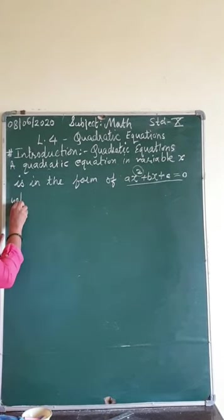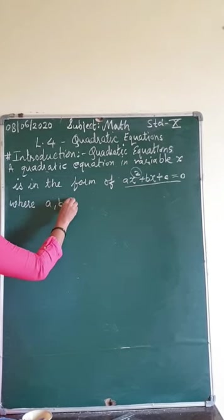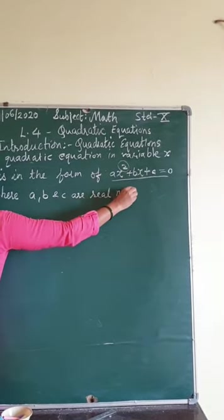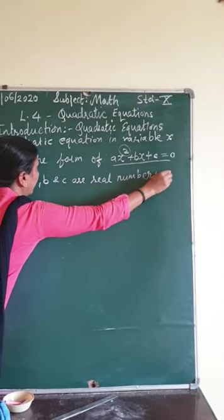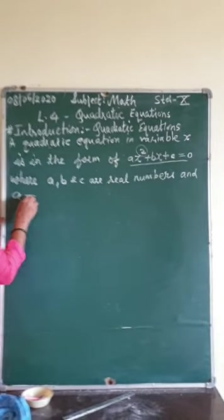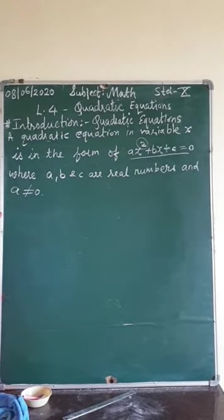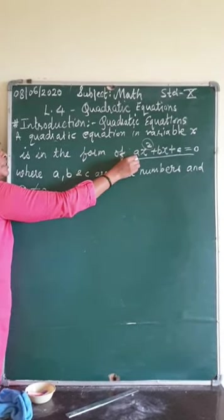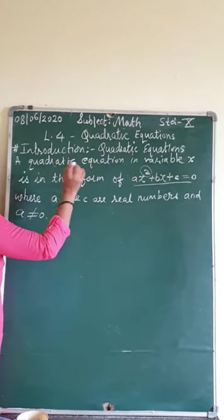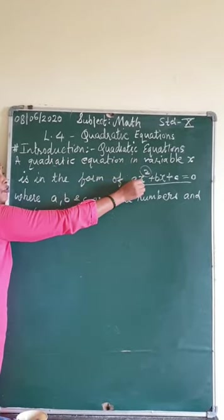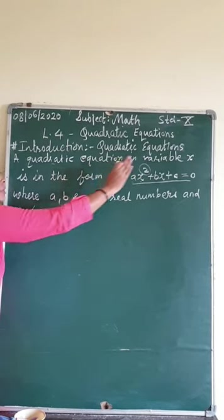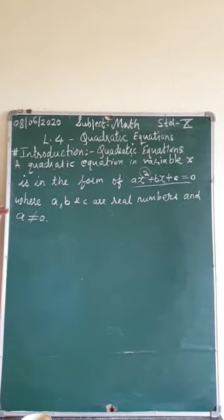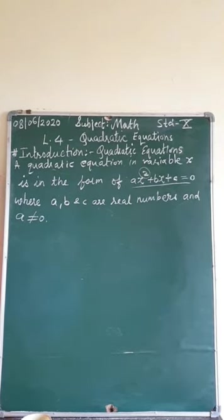Where a, b and c are real numbers and a should not be equal to 0. You know why a should not be equal to 0 — if a will be 0, this whole term will be 0 and that cannot be a quadratic equation with highest power of variable x as 2; it will be a linear equation like bx + c = 0. So I hope you have understood what is a quadratic equation.